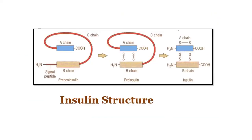Insulin is synthesized through the process of genetic engineering. Here you can see the insulin structure where you can see the A and B chains, and there is an extra C-chain or C-peptide which is removed. In the final mature insulin structure, the C-peptide is removed and both chains are linked through disulfide bonds, which are visible here.